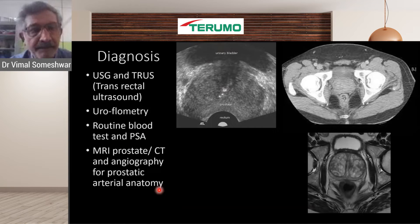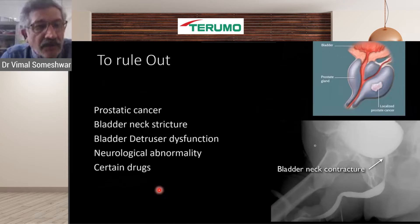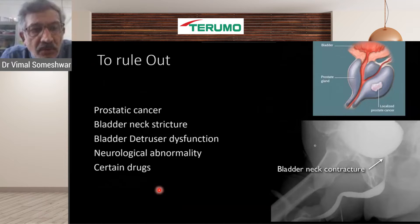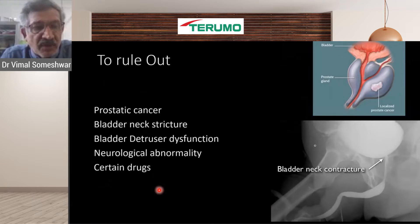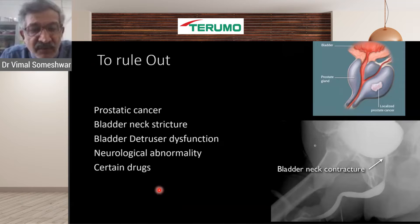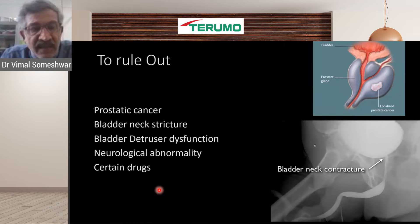We need to rule out prostatic cancer because when doing an embolization procedure, cancer should be excluded — cancer requires pure surgery. If there is a bladder stricture, that can also cause poor stream and similar symptoms. Bladder dysfunction can cause hesitancy and frequency. Neurological abnormality can mimic benign prostatic hypertrophy. Certain drugs can also cause bladder-related symptoms, and all of these have to be ruled out before taking up these patients for any procedure.